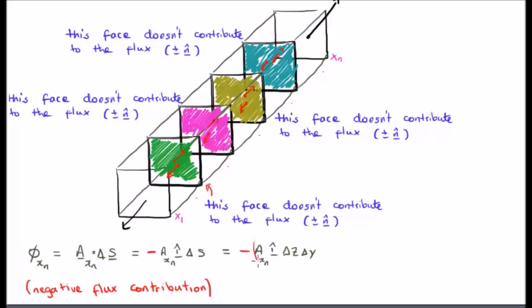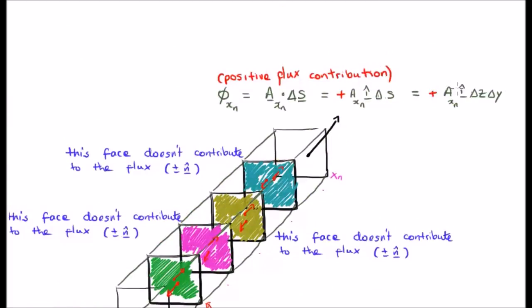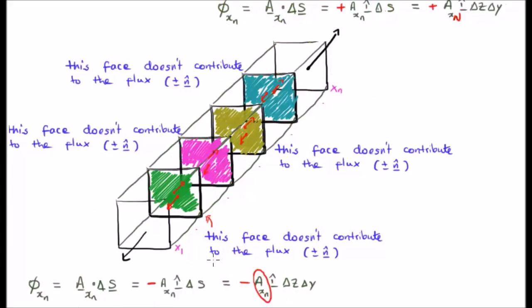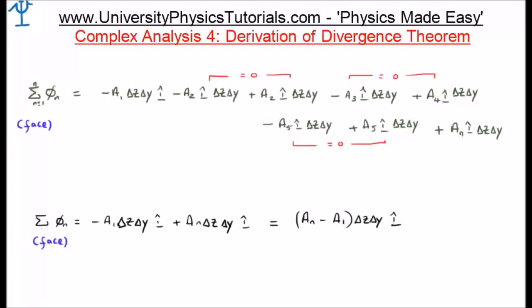The vector field is written as A_x at the first face and A_x at the last face. I've written out explicitly some of the flux elements for five faces, and you'll see there's cancellation. That's something you can read through at your own pace. The sum of the flux through each face is really given by the flux at the last face and the flux at the first face — and because the unit normals are in opposite directions, we're looking at the difference between them.